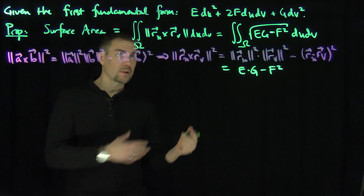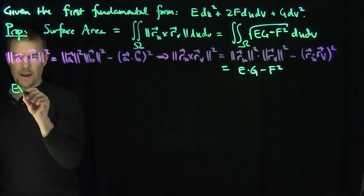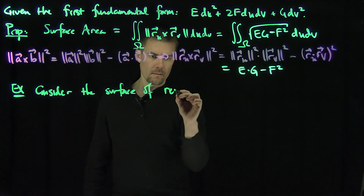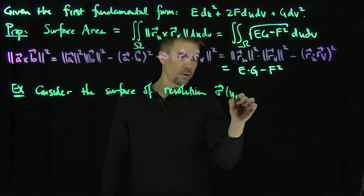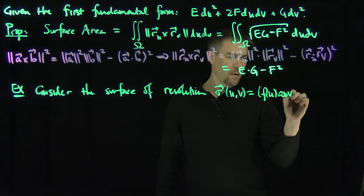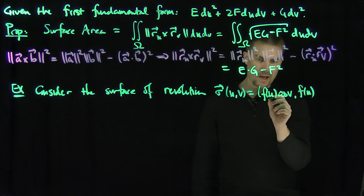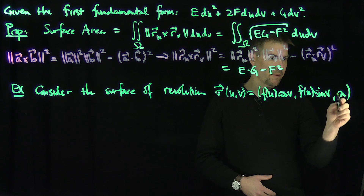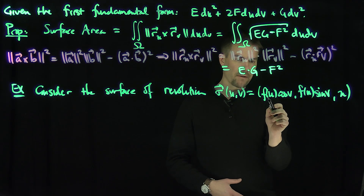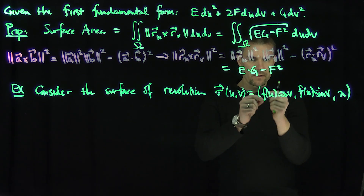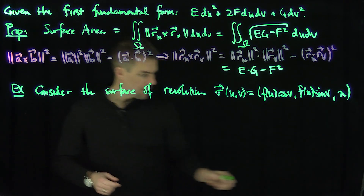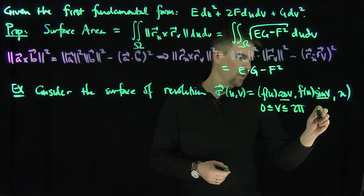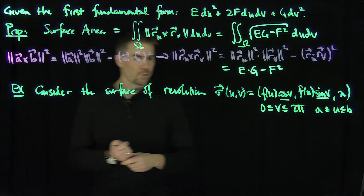Excellent. Let's see an example and how it relates to previous formulas for surface area. We'll consider a surface of revolution. Take σ(u, v) where we rotate a function f of u around the z-axis: σ(u, v) = (f(u) cos v, f(u) sin v, u), where v goes from 0 to 2π and u goes from a to b.